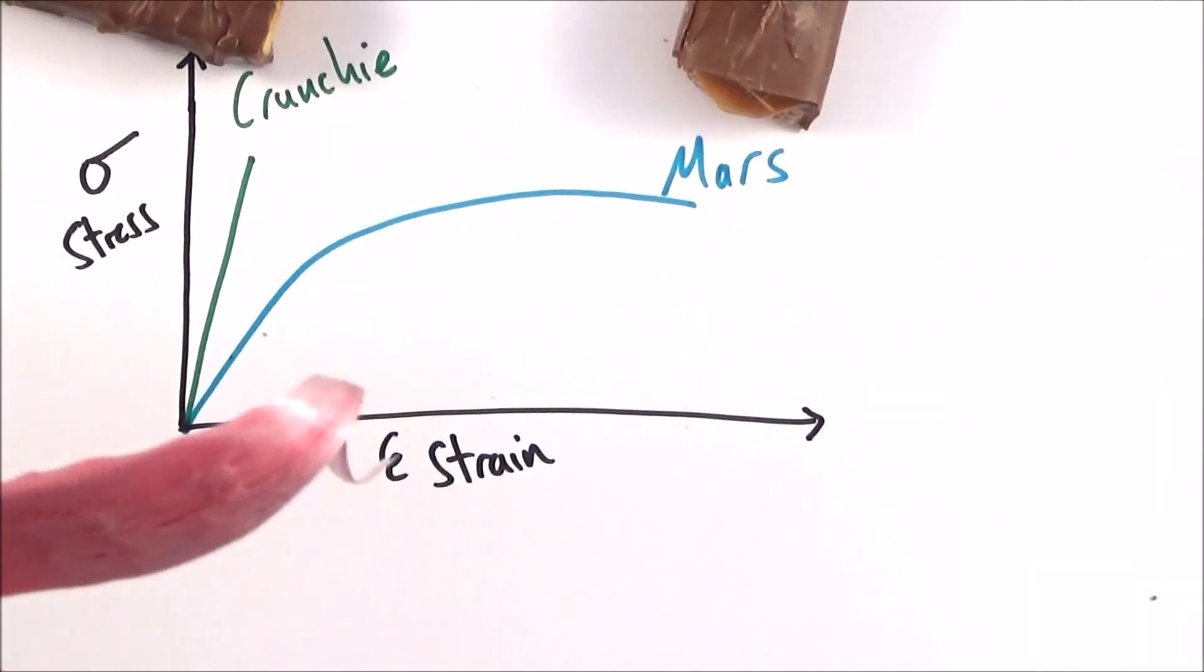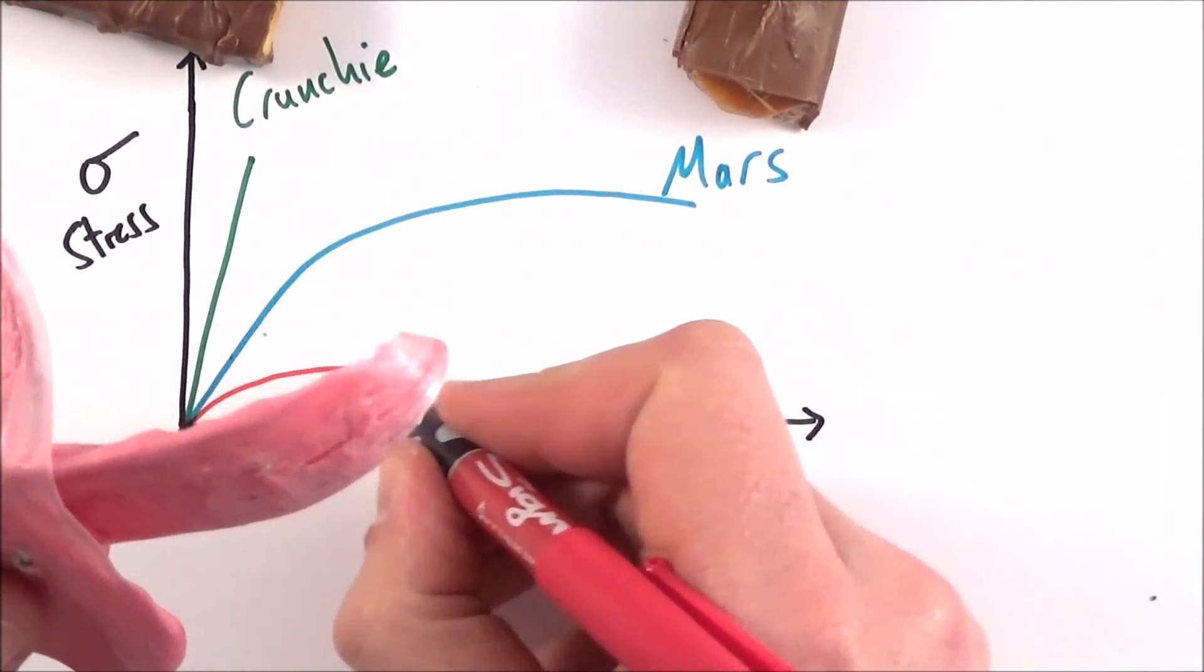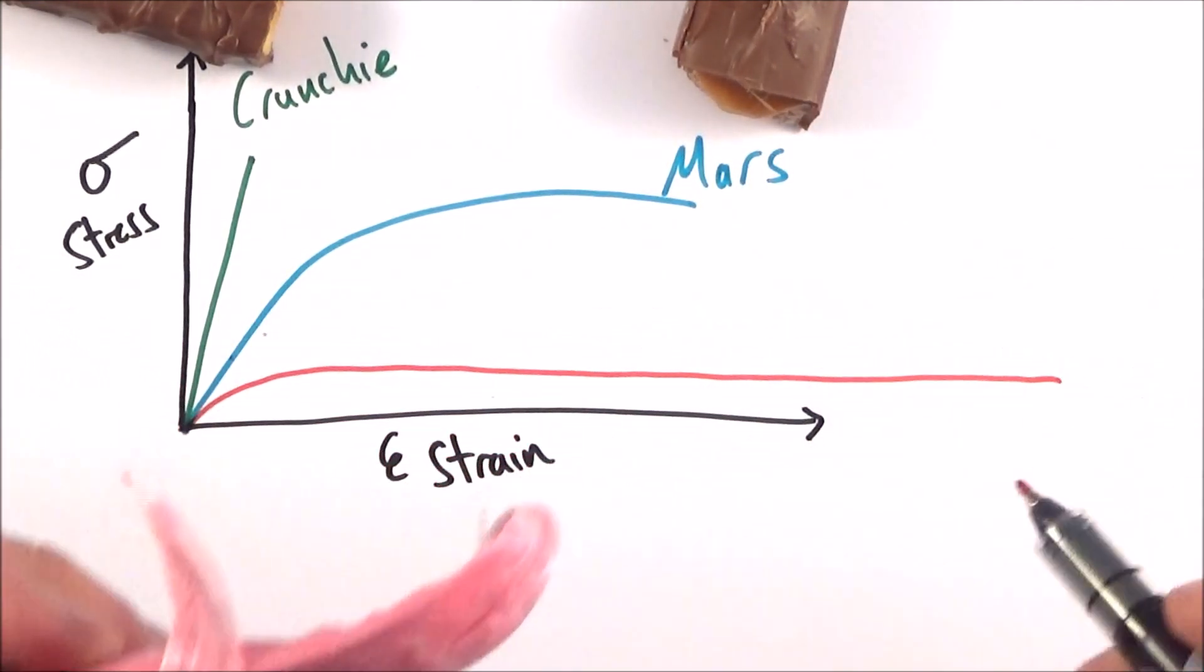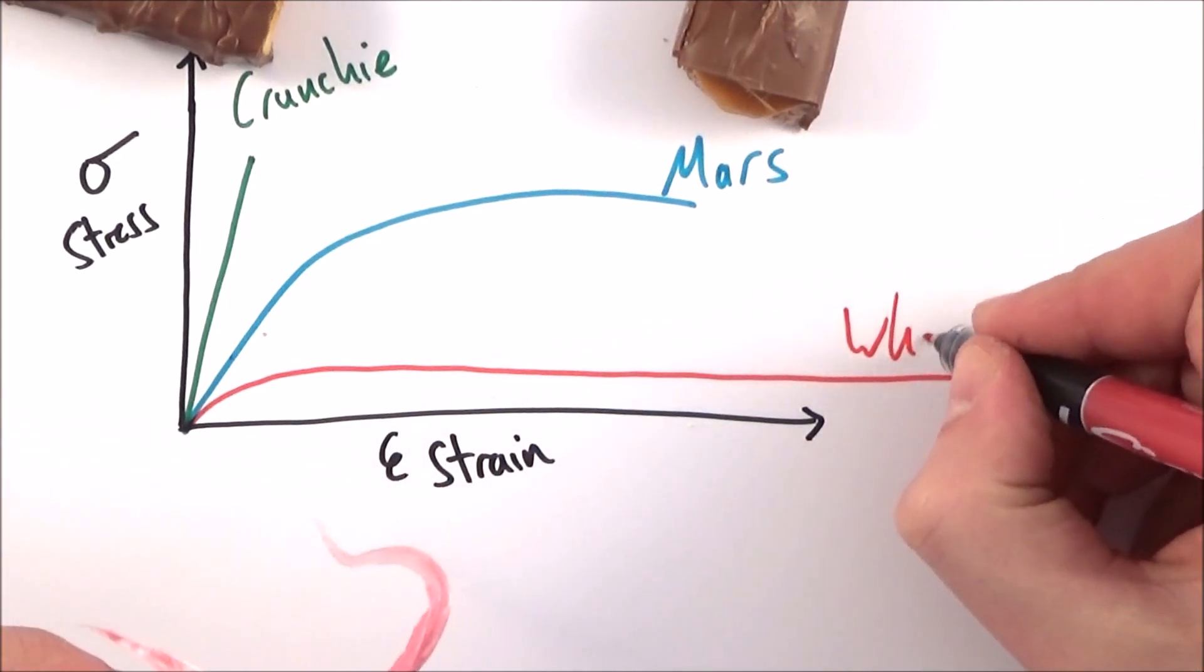And again, if I draw this on the graph, we might get something that looks like this. So this is going to be my Wham.